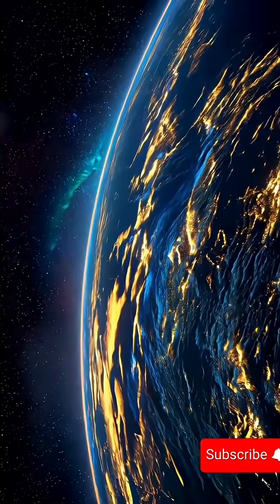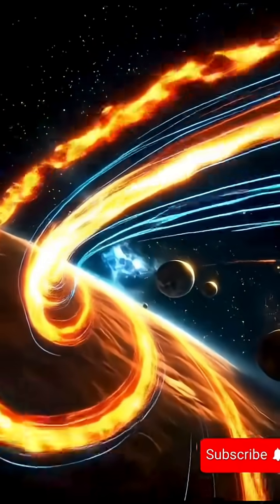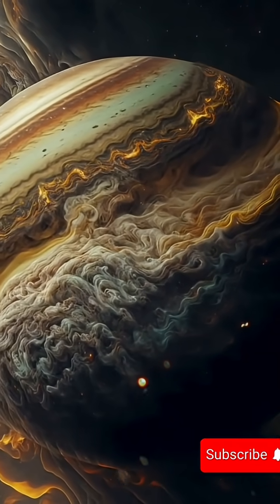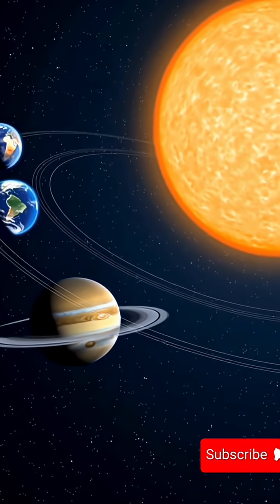That's what scientists call a galactic year. And here's the fascinating part. Our solar system isn't moving in a straight line. It's tilted at about 60 degrees to the galactic plane, tracing a beautiful helical path through space.